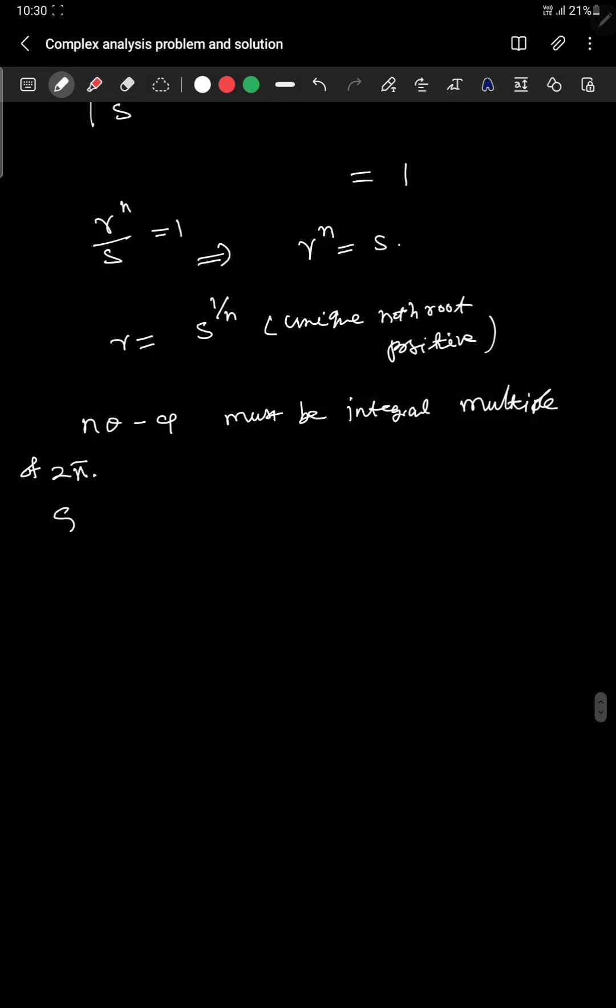So the set of solutions, let us say call it S. It is nothing but s^(1/n)·e^(iφ/n), s^(1/n)·e^(i(φ/n + 2π/n)), up to s^(1/n)·e^(i(φ/n + (n-1)·2π/n)).